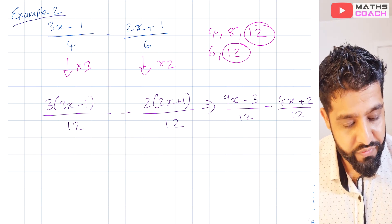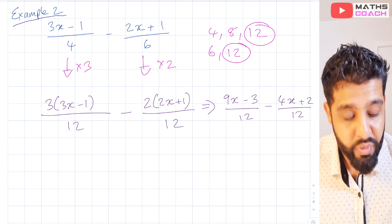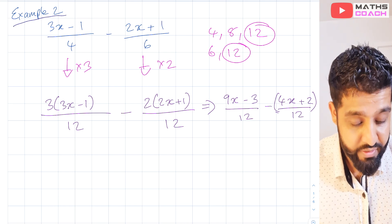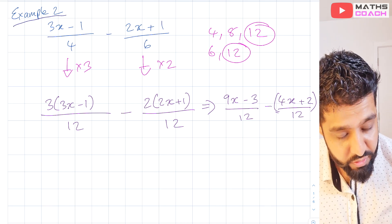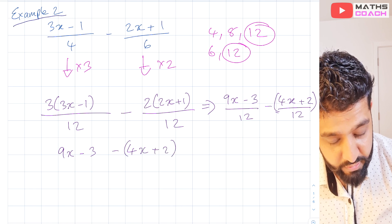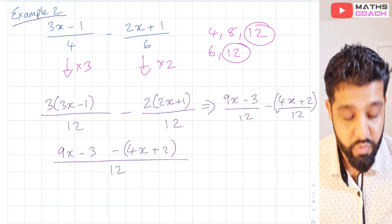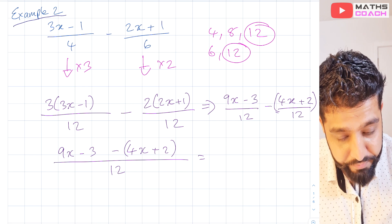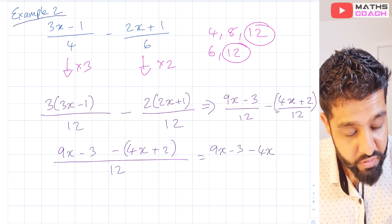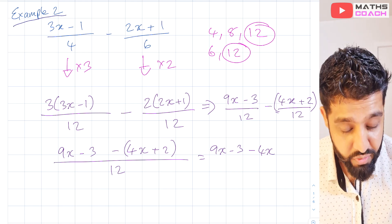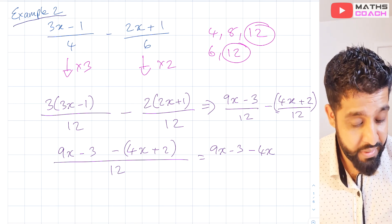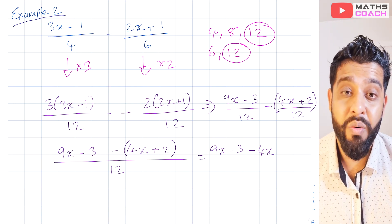Be very conscious of the negative sign between the two fractions, because students often make mistakes when collecting numerators together. Put the second numerator into a bracket — so we have (9x minus 3) minus (4x plus 2) — all over 12. The reason for the bracket will become clear: when the minus multiplies through, the plus 2 inside the bracket comes out as negative 2.